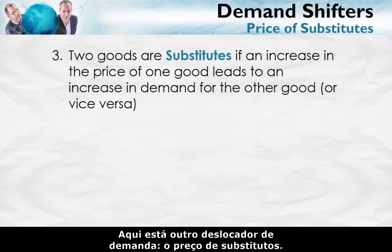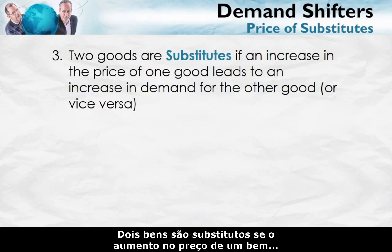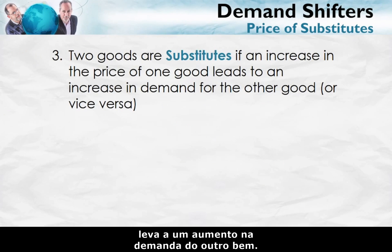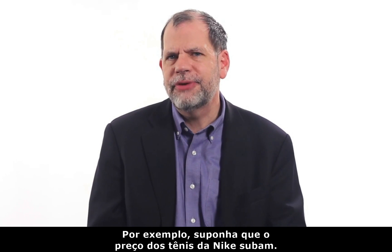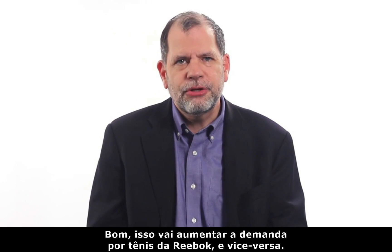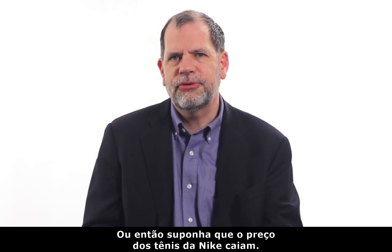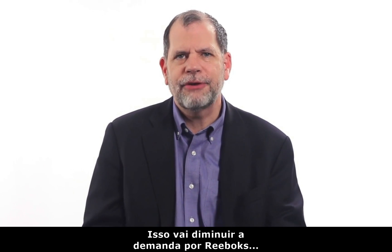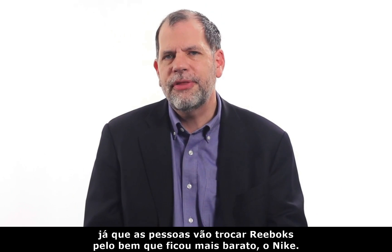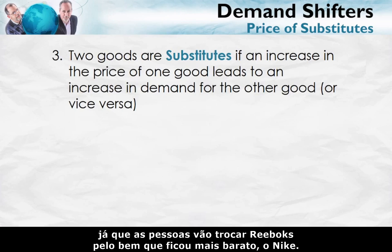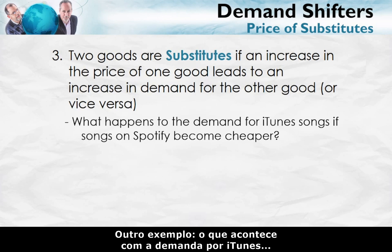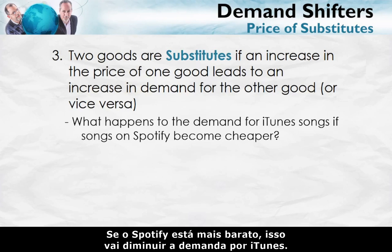Here's another demand shifter: the price of substitutes. Two goods are substitutes if an increase in the price of one good leads to an increase in demand for the other good as well. For example, suppose that the price of Nike shoes goes up — that is going to increase the demand for Reebok shoes, and vice versa. If the price of Nike shoes goes down, that is going to decrease the demand for Reeboks as people switch to the now cheaper Nike. Similarly, if songs on Spotify become cheaper, that is going to decrease the demand for iTunes.